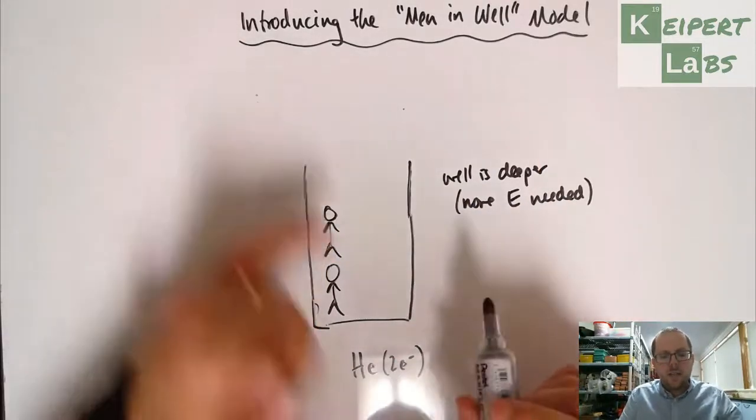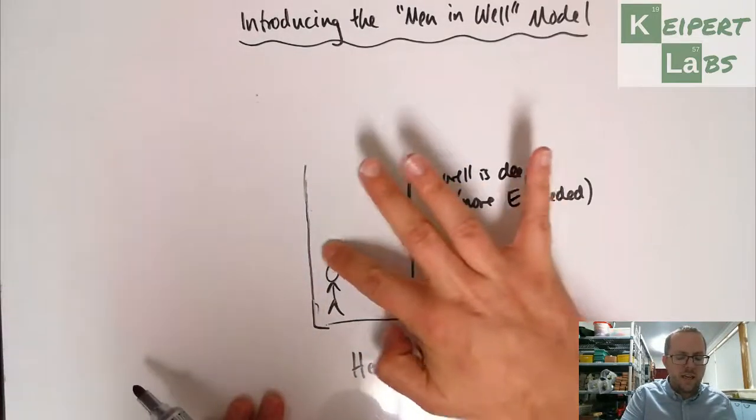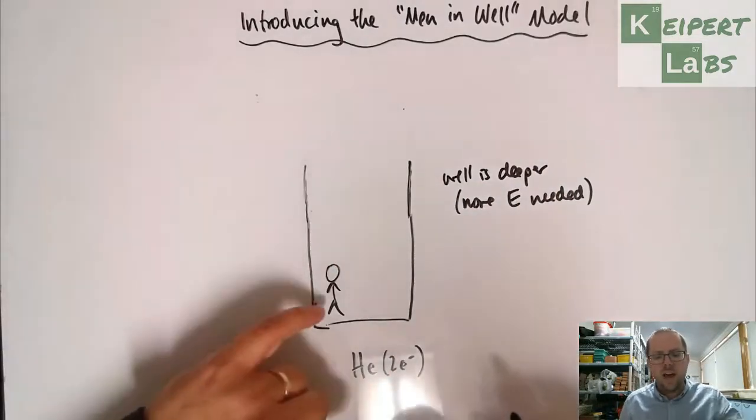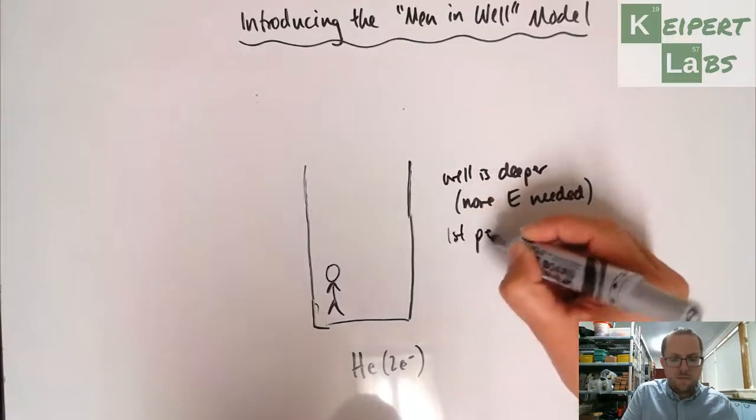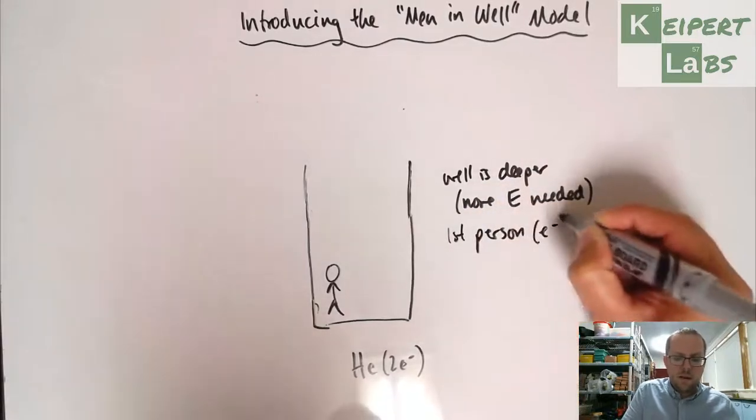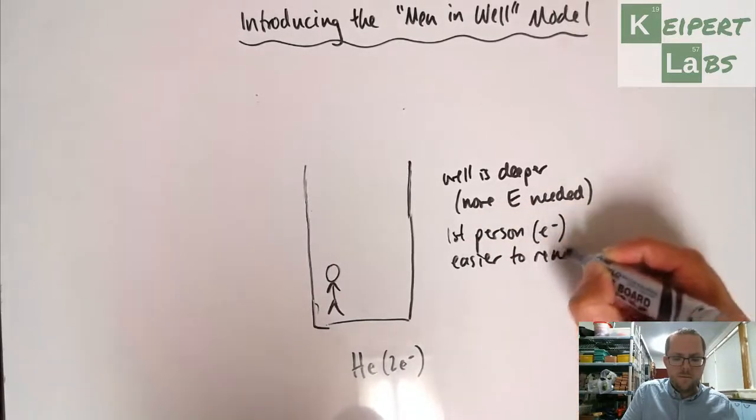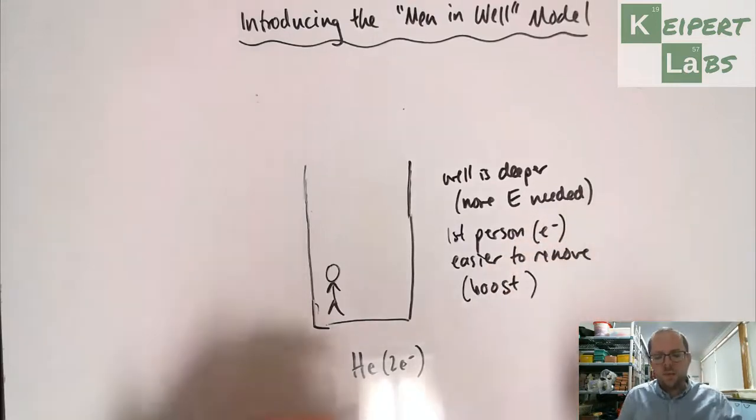A certain amount of energy is involved getting him out. But then of course once he is out we have one person stuck down the bottom of the well again, so he is hard to get out. So the first person is easier to remove because we've been given a boost. And then the last one is hard.